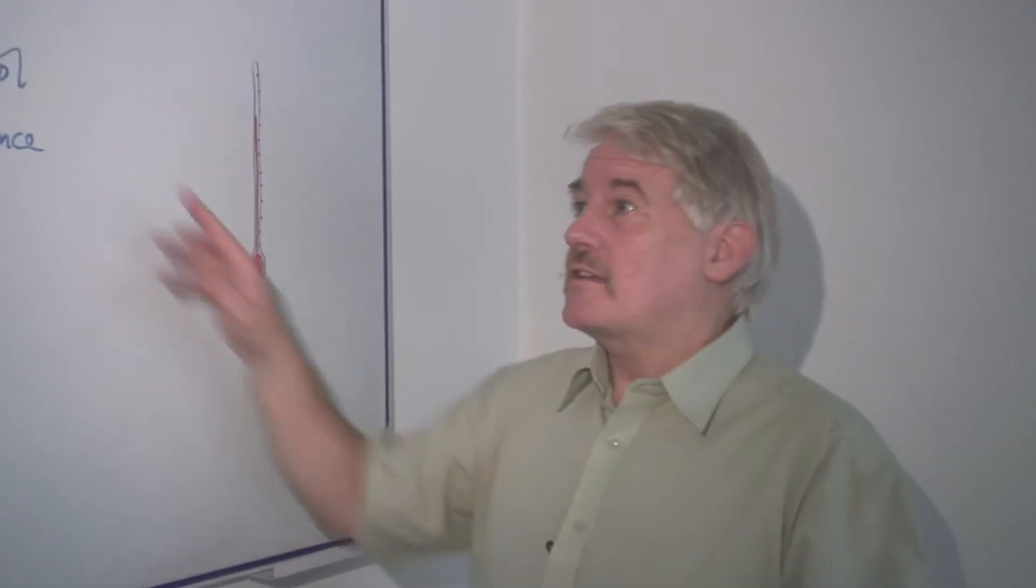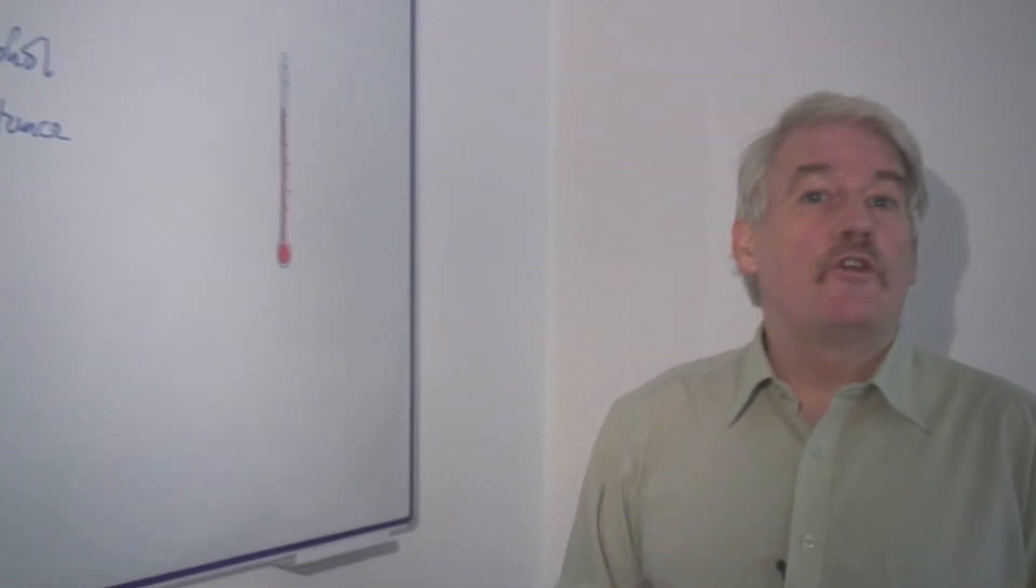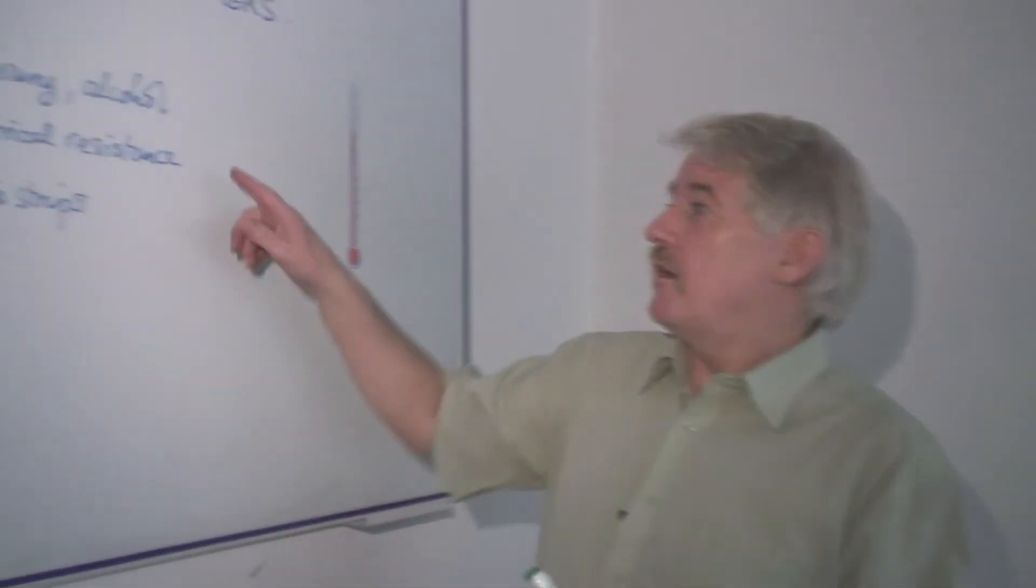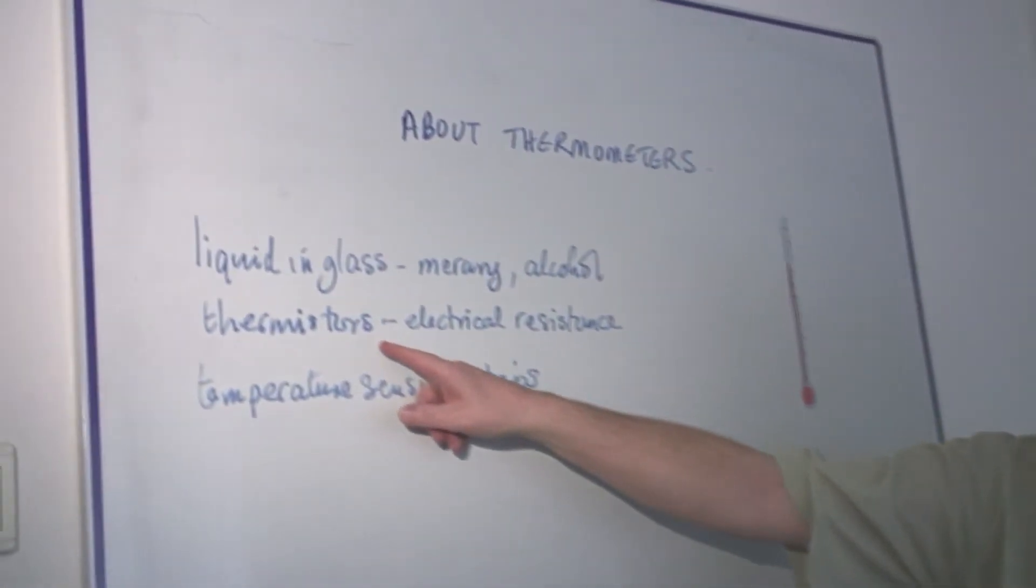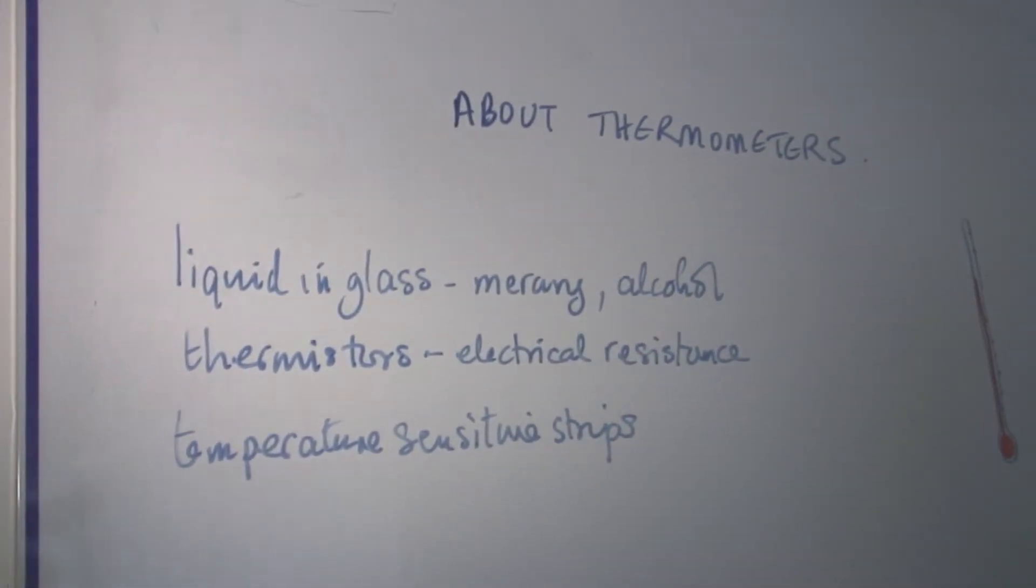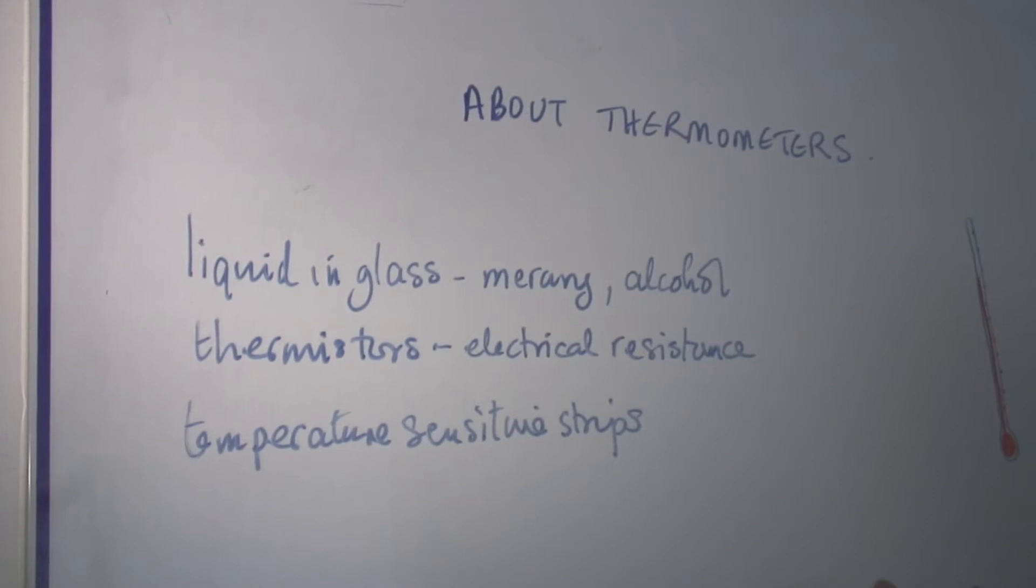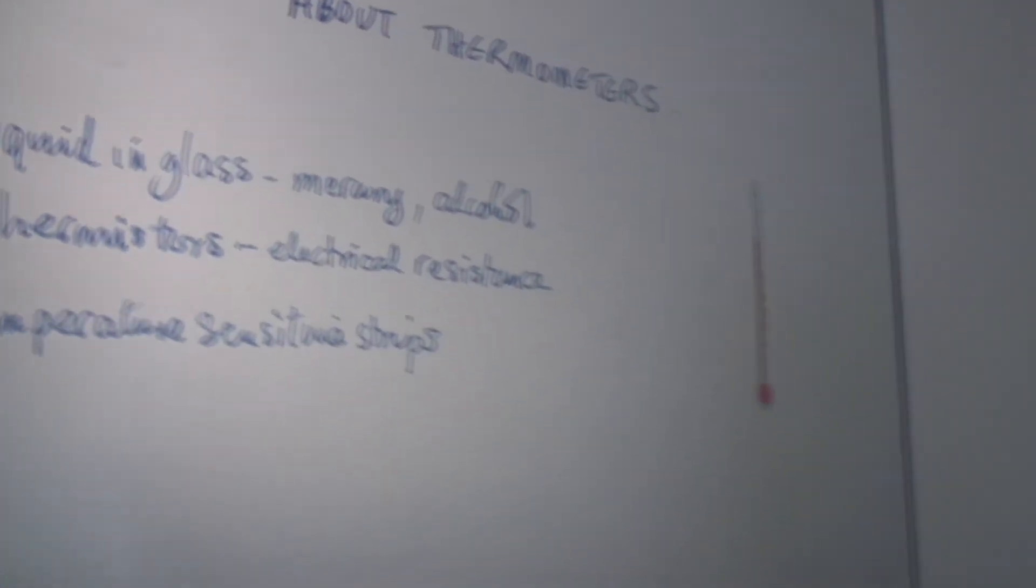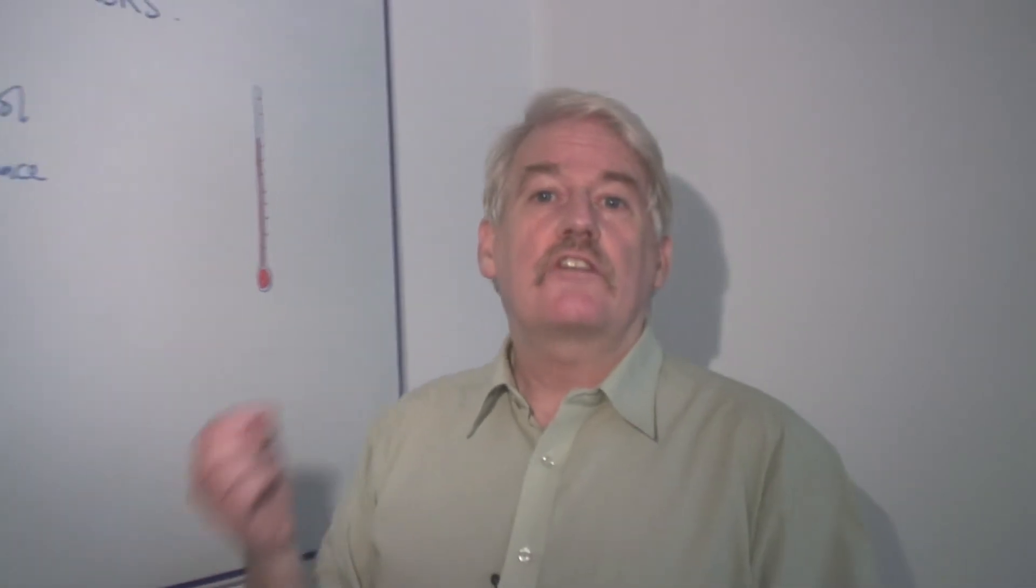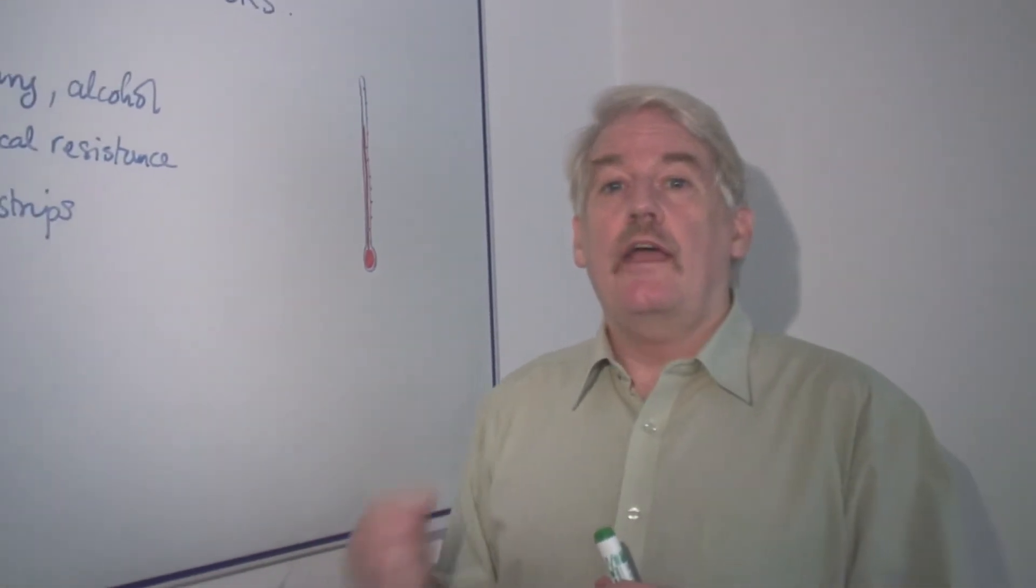Now liquid in glass thermometers have been around for hundreds of years but something newer are things called thermistors or basically electrical resistance thermometers. Now we know if we have a piece of metal that conducts electricity, the ability to conduct electricity depends on how hot it is.